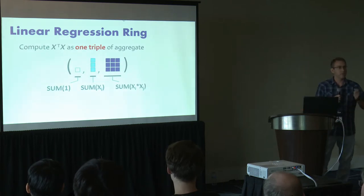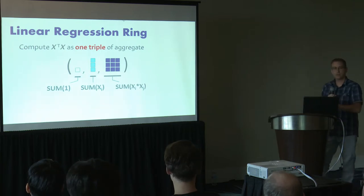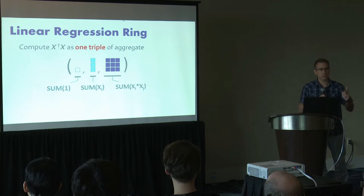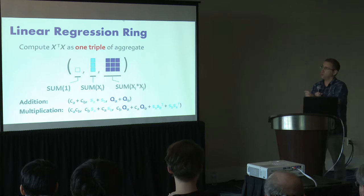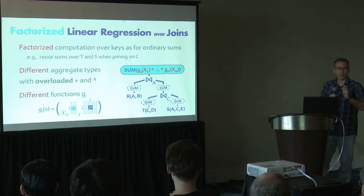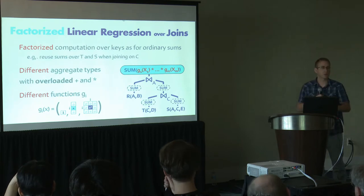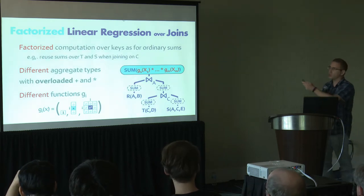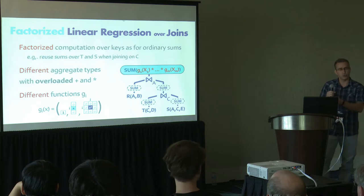The way we solve this is by defining a compound aggregate — a triple of a count, a vector of sums, and a matrix of sums of products of variables. Instead of computing just a single scalar count, we compute this compound aggregate. To do so, we define new plus and multiplication operations over this structure, ensuring we have a ring. Once we have the ring structure, we can use essentially the same computation as for the count query to compute the cofactor coefficients. The only differences are the specialized aggregate values, overloaded plus and multiplication operators, and G functions that map domain values to elements of the ring.